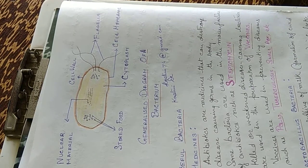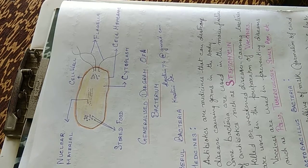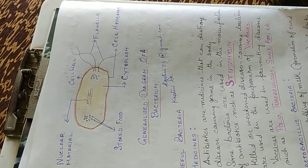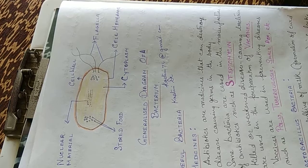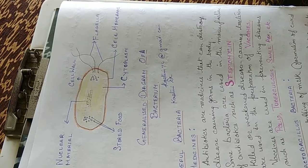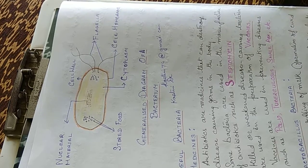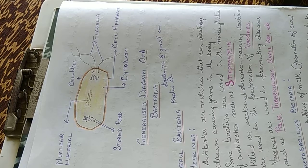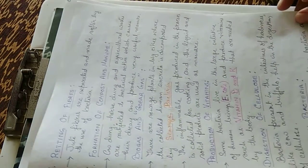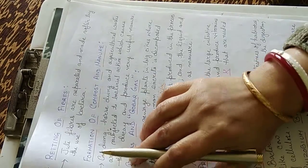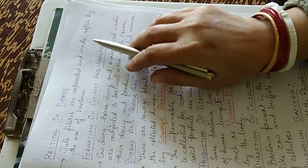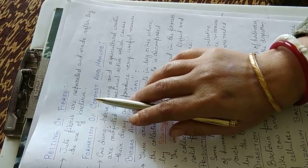Acetobacter bacteria ferment fruit juices into vinegar that is acetic acid. For tanning, certain bacteria are used in curing of animal hides and skins. For retting of fibers, jute fibers are separated and made softer by the use of bacteria.